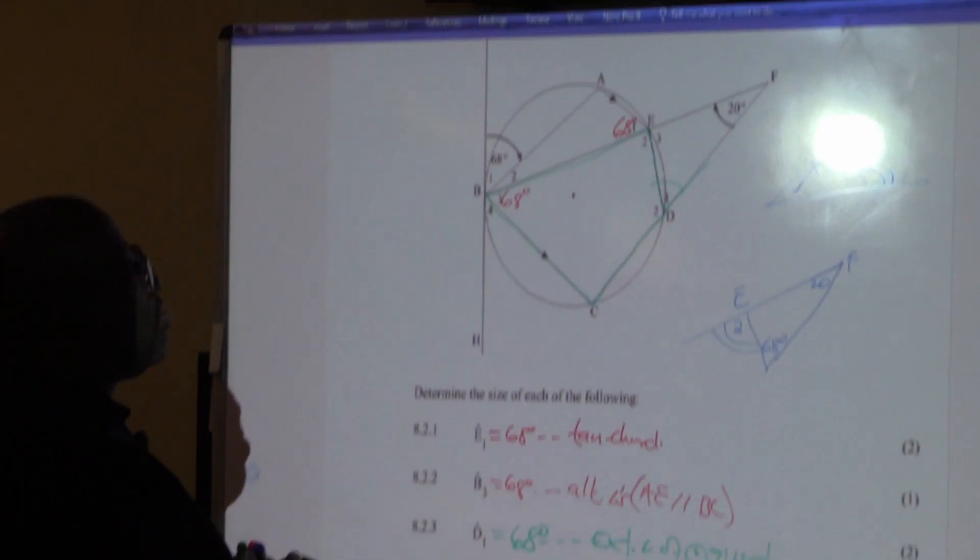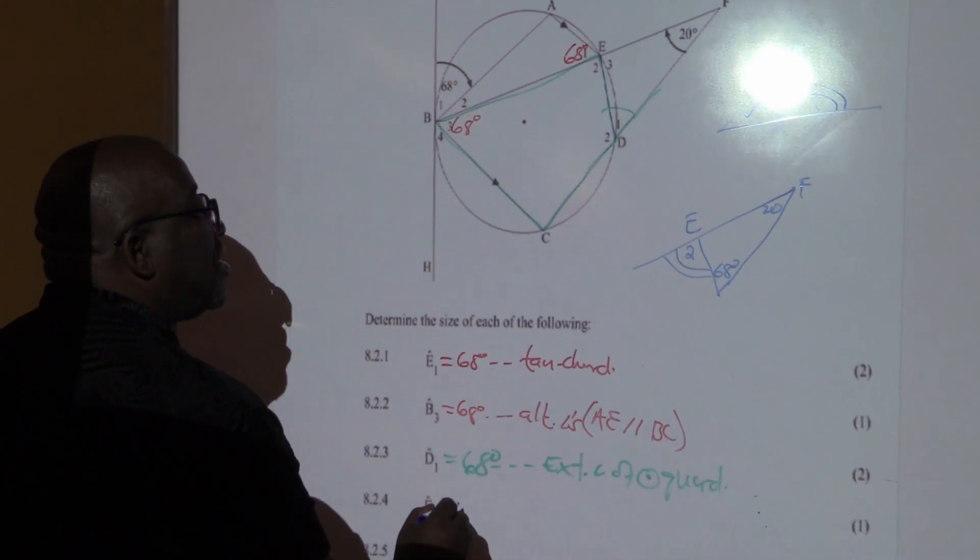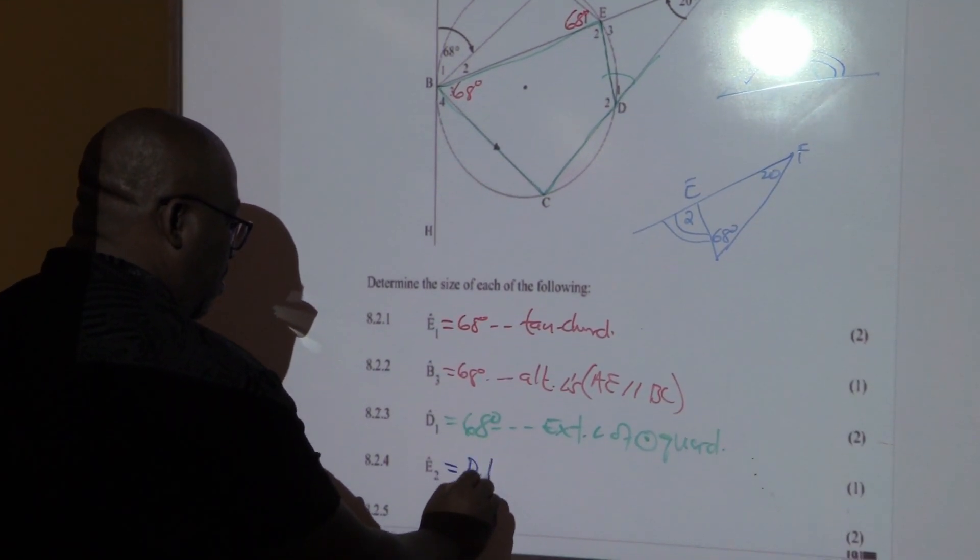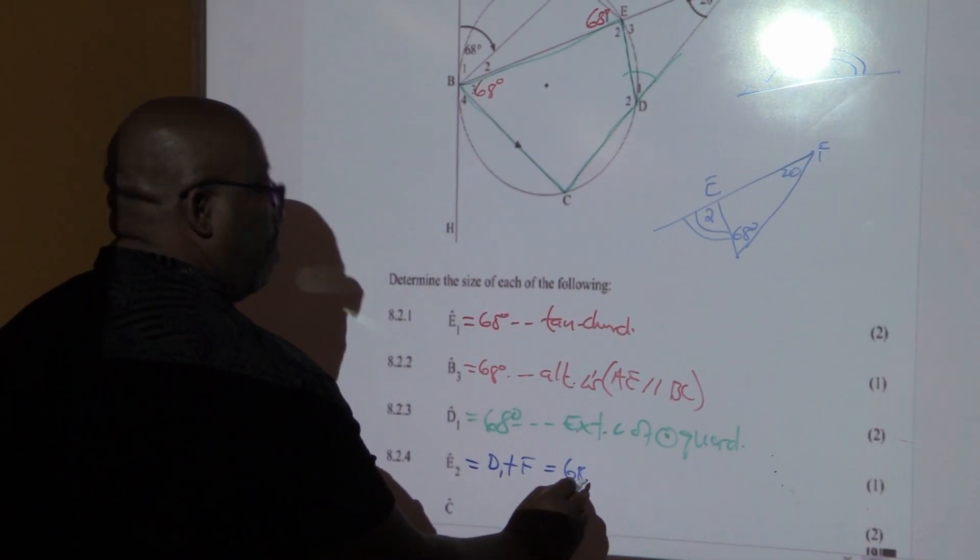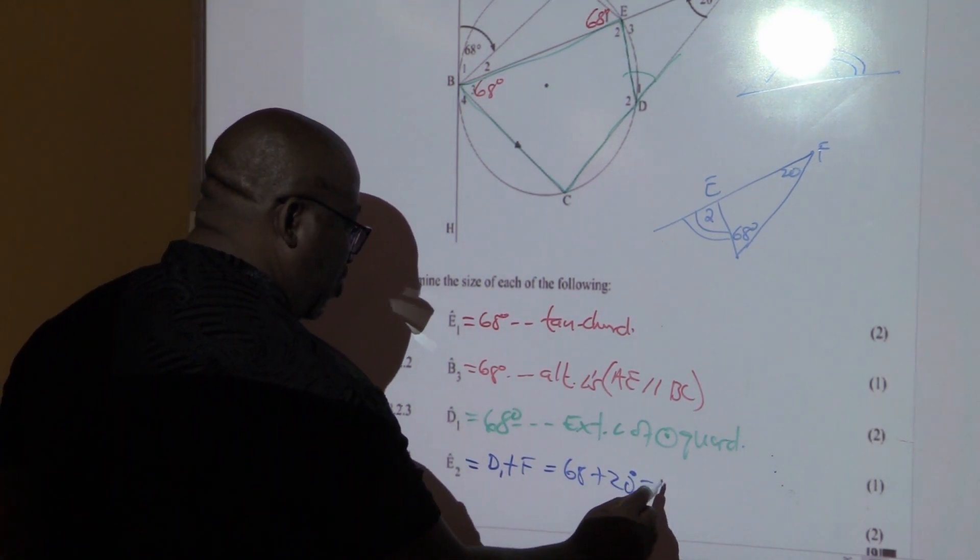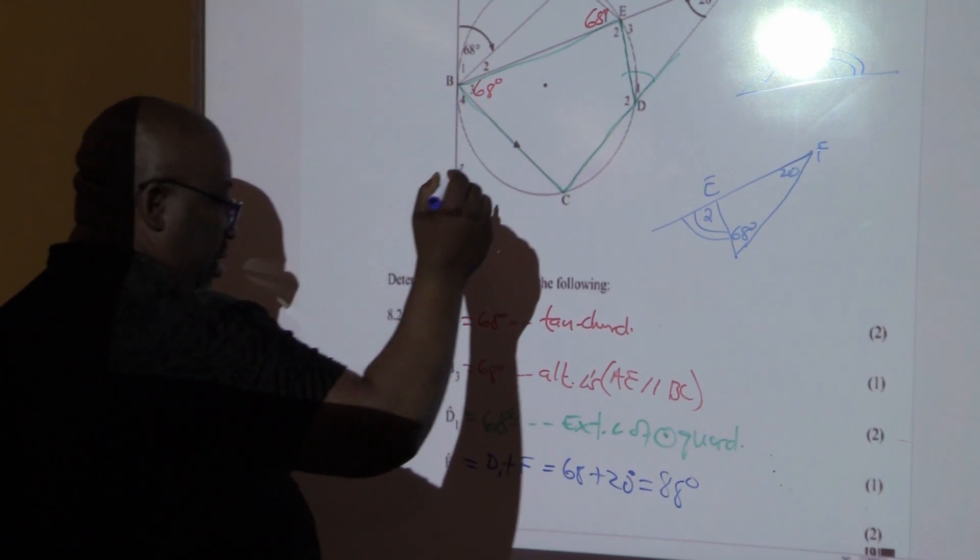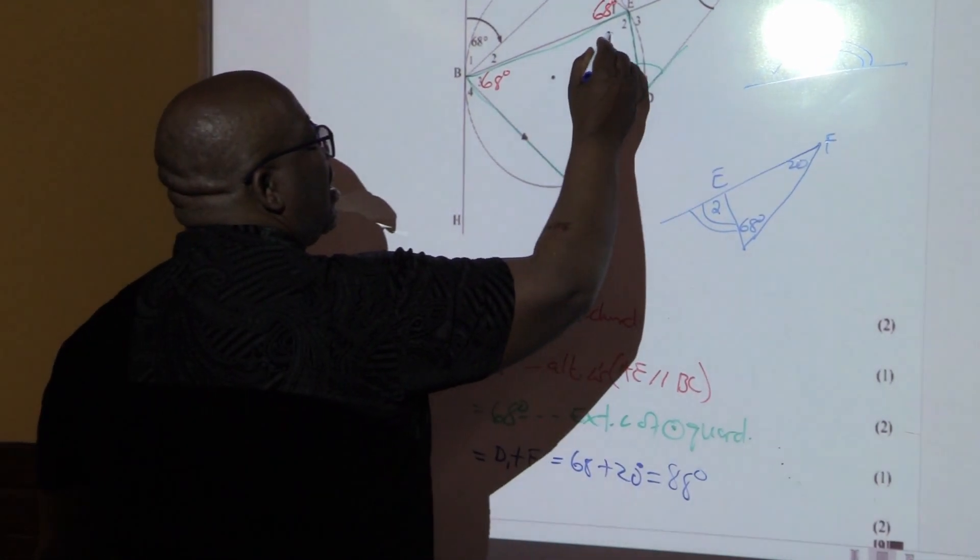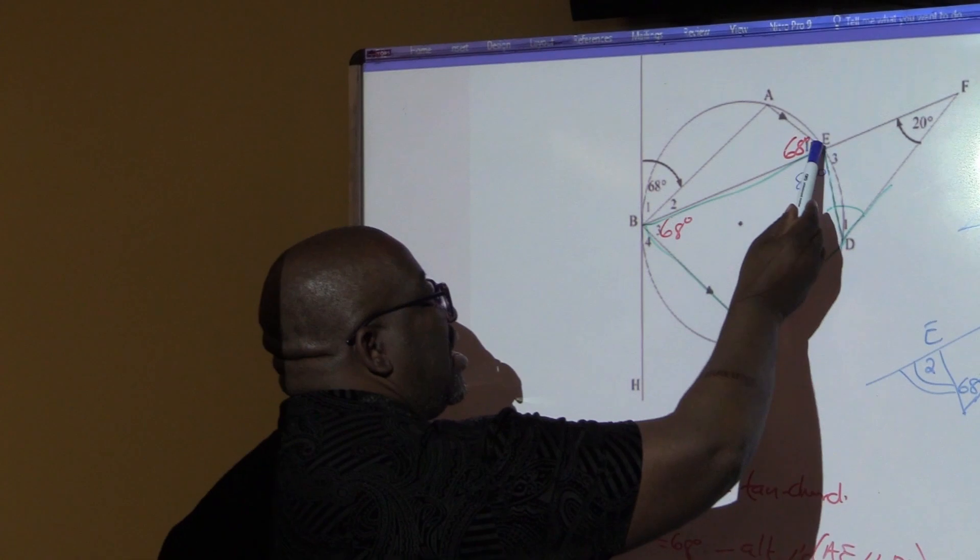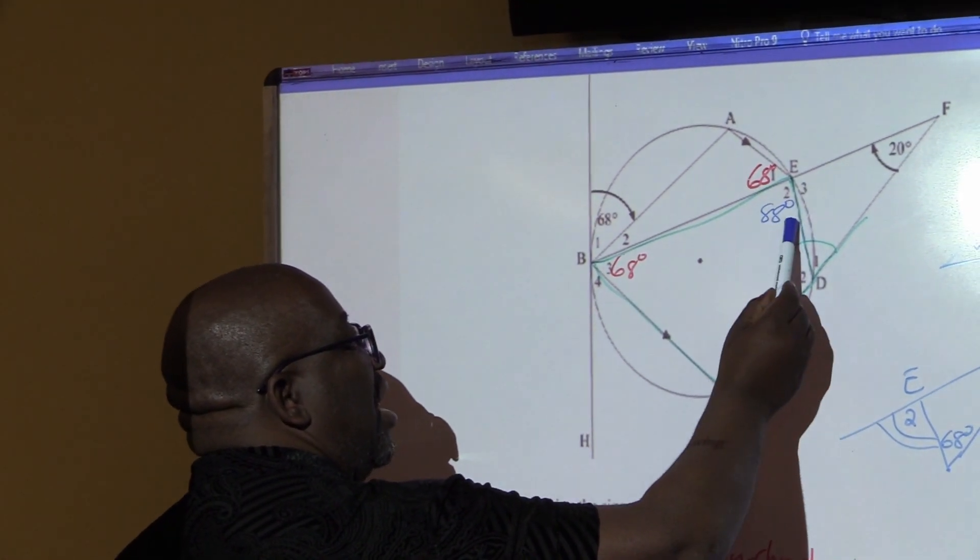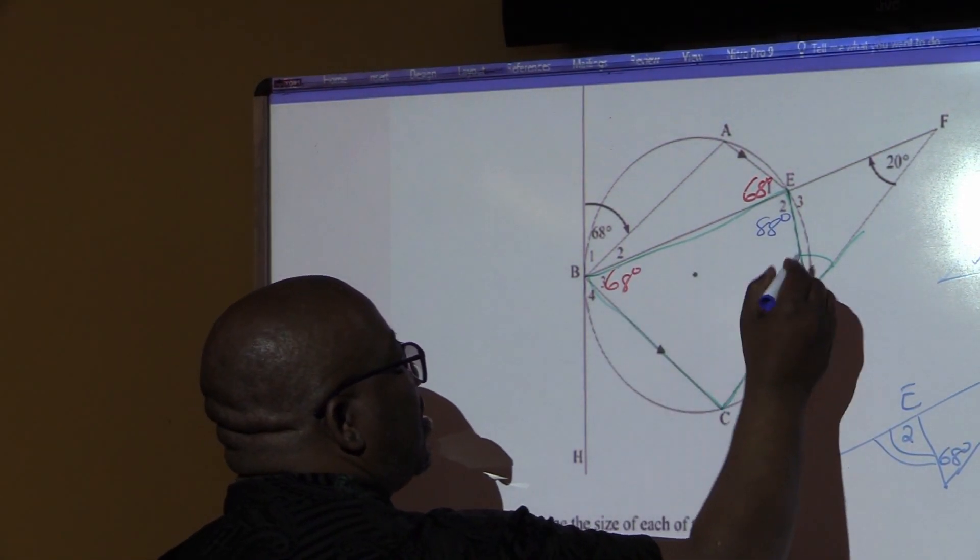It's actually that theorem from grade 8. Hence we started there when we're dealing with grade 8, grade 9. So my E2. E2 in this part of the case. E2 is equal to D1 plus F, which is the same as 68 plus 20, which will eventually give me 88. So E2 is equal to 88 degrees. This is 88. E2 is equal to 88 degrees. This one, the exterior angle of this triangle. This is the exterior angle, is equal to the sum of the two opposite interior angles. Remember that our D1 was 68 degrees.